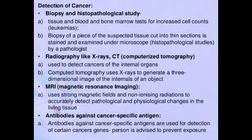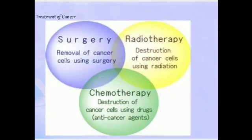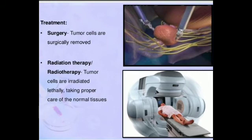Cancer can be detected by biopsy and histopathological studies of tissues and blood, with the help of bone marrow tests for leukemia. It can also be diagnosed by radiography, CT scan, and MRI for internal organ cancer. Molecular biology techniques are also used to study genes.